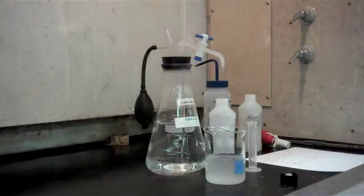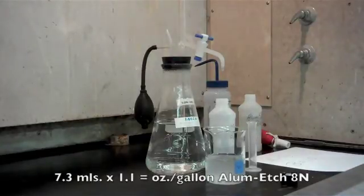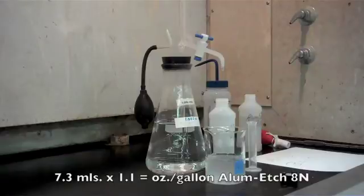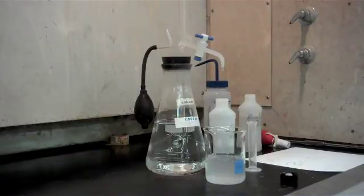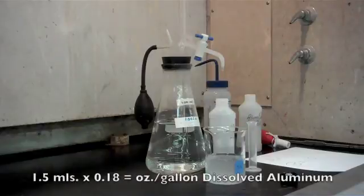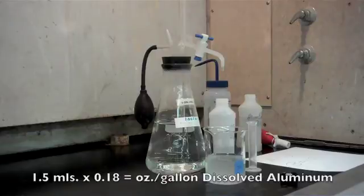So our first endpoint was 7.3 mils. We're going to multiply that by 1.1, and that will equal our ounces per gallon concentration of etch. Then the second endpoint that we got is one and a half mils. We're going to multiply that by 0.18, and that will give us ounces per gallon as dissolved aluminum as contamination in the bath.